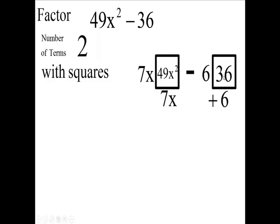Okay? Now, we have a minus 6, a minus 6, and a plus 6 gives me a minus 36 when we multiply them. So the answer is 7x minus the 6 and 7x down here plus this 6.